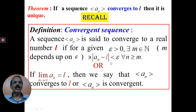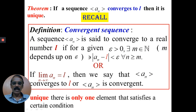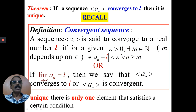This is the definition of convergent. Then what do you mean by unique? The meaning of unique is exactly one and only one — there is only one element that satisfies a certain condition. Now we have to show that there is only one l which satisfies this condition.